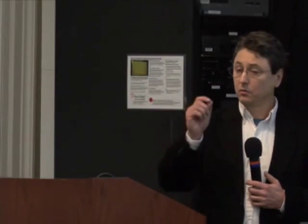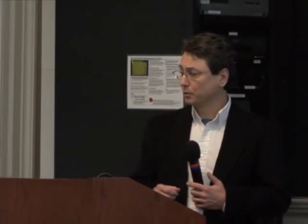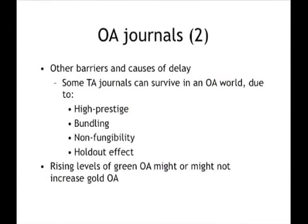By non-fungibility, I just mean that journals don't publish the same articles as one another. So if you've got a toll access journal and an open access journal in the same field, they publish different articles — and if your school needs access to the ones in the expensive journal, you have a reason to continue to subscribe. The holdout effect: if we really have a trend toward conversions to open access, every time subscription journals convert, we save money in the library. That money can be spent on open access alternatives — but it could also be spent on the holdouts who still charge subscriptions. So the last ones to convert will find it easier to find subscribers, and they may want to be the last to convert unless they've seen the actual benefits of open access.